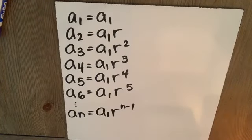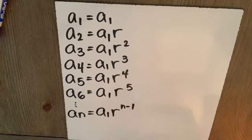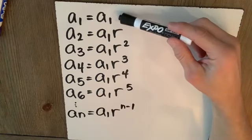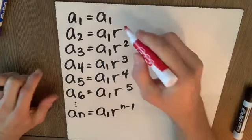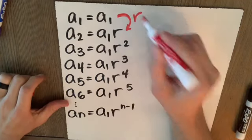Where did this general term for an explicit formula come from? If a1 is equal to a1, how do we get to a2? We multiply by the common ratio.